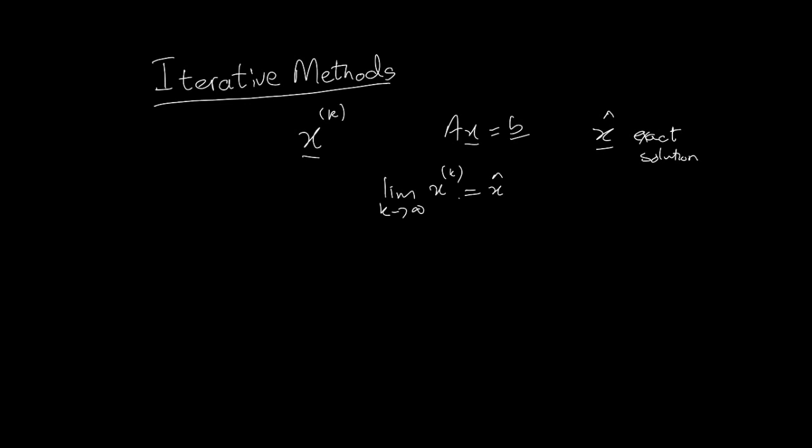In theory, an infinite number of improvements would lead, ideally, to the best solution. Because if it doesn't, then of course the iterative method is failing.